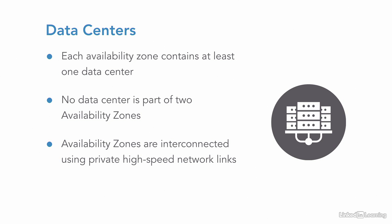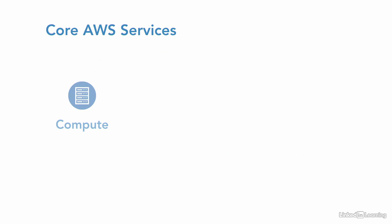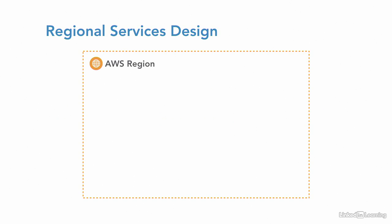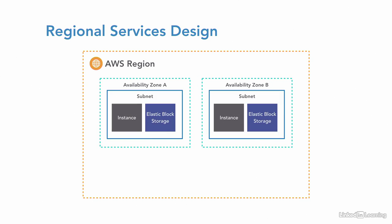The core services you have to be concerned with for securing are your compute resources — your virtual servers — the network where those servers are going to reside, and the storage resources that those compute resources are going to attach to, such as virtual hard drives or other storage arrays. Within each region, this is a bit of a campus map of the different services available. You'll design your applications to have failover between availability zones, and each availability zone hosts subnets, instances — that's virtual servers on those subnets — and the storage that connects to those instances. That's the data center components.